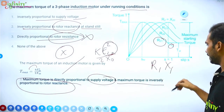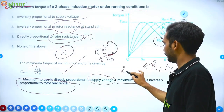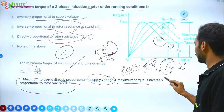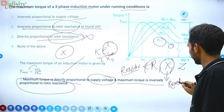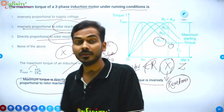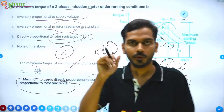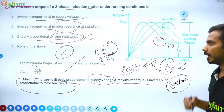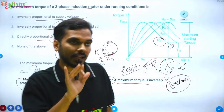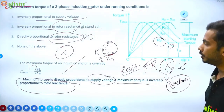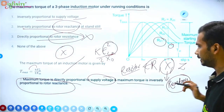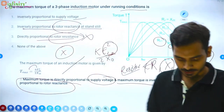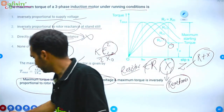Three important terms: R, X, and Z. R is resistance — the opposition to current flow in a circuit. X is reactance — opposition offered by frequency-dependent components such as inductors and capacitors against the flow of current. Z is impedance — the combination of resistance plus reactance. So Z = R + jX.